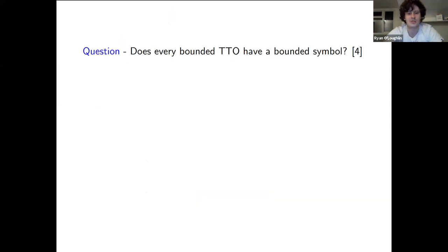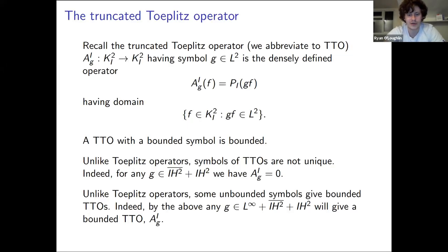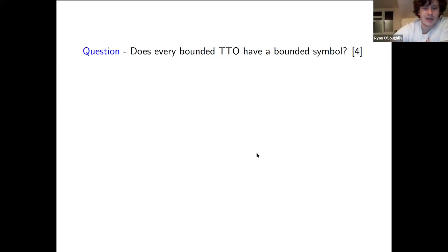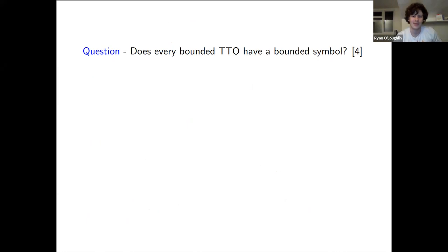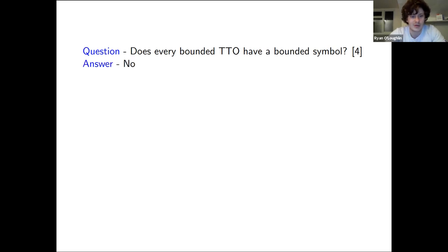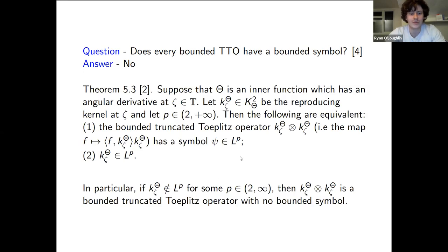A first natural question to ask: a bounded symbol gives a bounded operator, and there's a lot of freedom of choice for the symbol. The question — actually posed by Sarason in his seminal 2007 paper — is: does every bounded TTO have a bounded symbol? This was posed in 2007 and answered negatively around two years later.